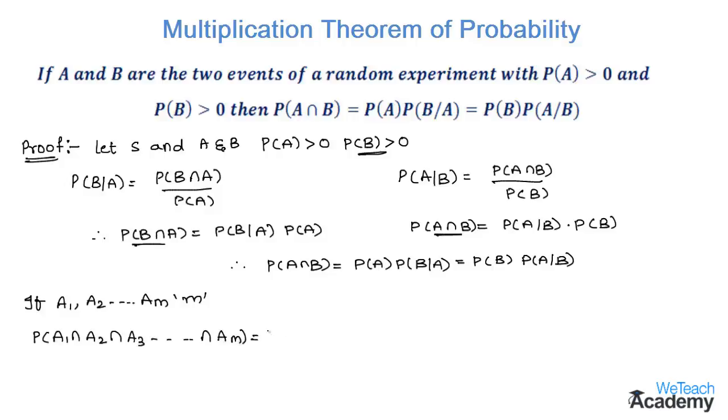so on intersection Am) is equal to P(A1) into P(A2 by A1) into P(A3 by A1 intersection A2), so on P(Am by A1 intersection A2 through Am-1).